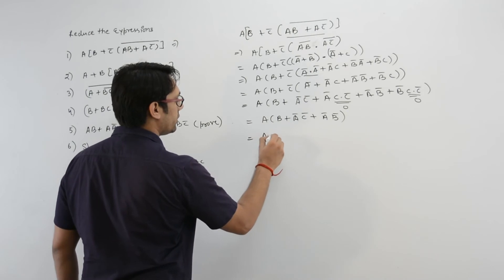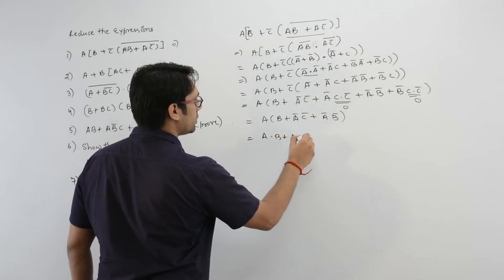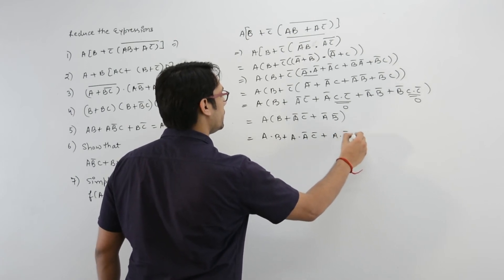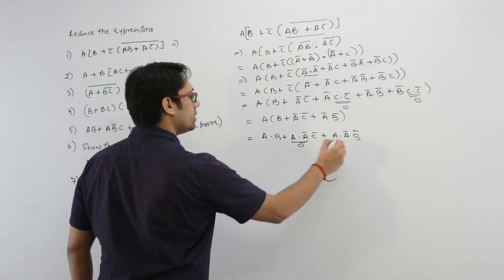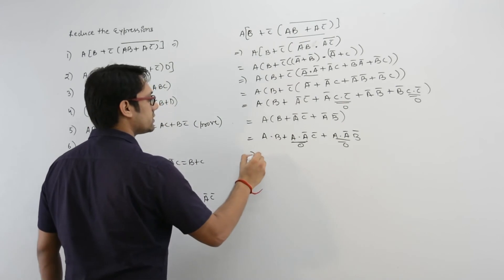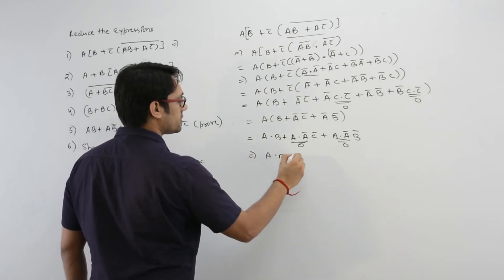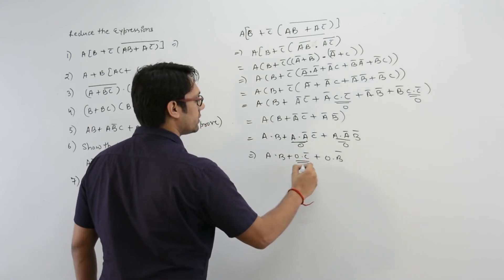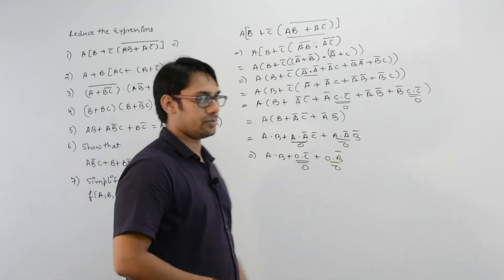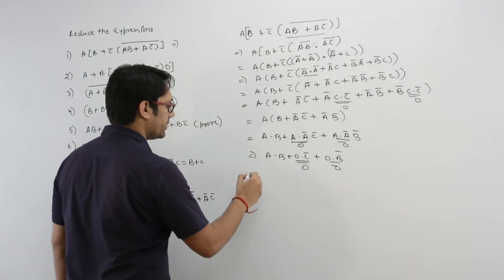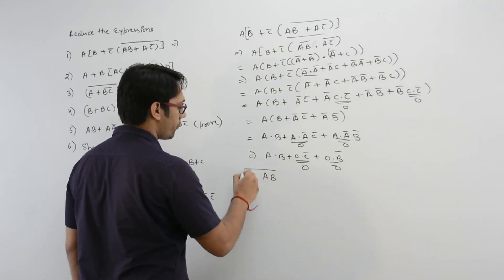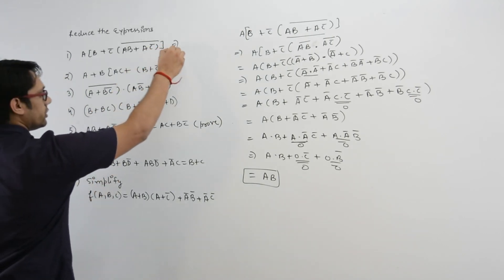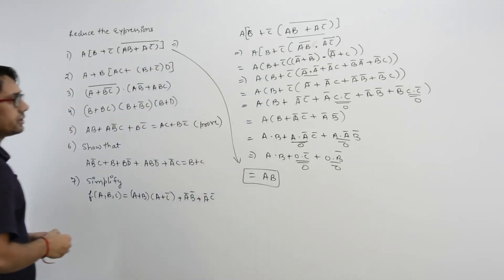It can be written as a dot b, plus a dot a complement c complement, plus a dot a complement b complement. Since a dot a complement equals 0, it is a dot b plus 0 dot c complement plus 0 dot b complement. This gives AB only. So you can reduce this expression to simply AB.